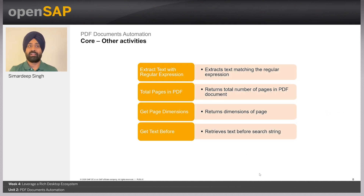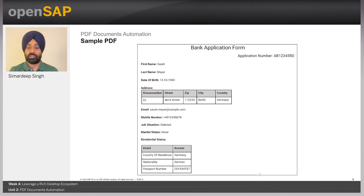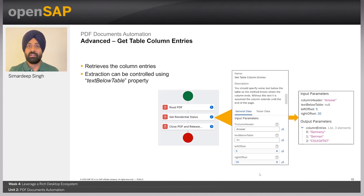Some other core activities are described in this slide. We have successfully extracted simple strings like 'job situation' or 'first name' using the core activities. But the question arises: how do you extract text from a table? For example, we want to extract the residential status of the applicant and the values — country of residence, nationality, and passport number.